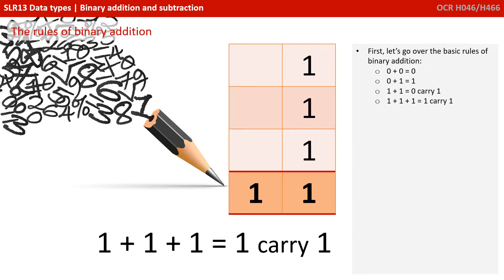And finally, 1, 1 and 1 in binary is 1, carry the 1. Because 1 and 1 and 1 is obviously 3, we can't have a 3 in binary, so we carry 1 into the next column, which would give it a weighting of 2, plus the 1 left over in this column for 3.